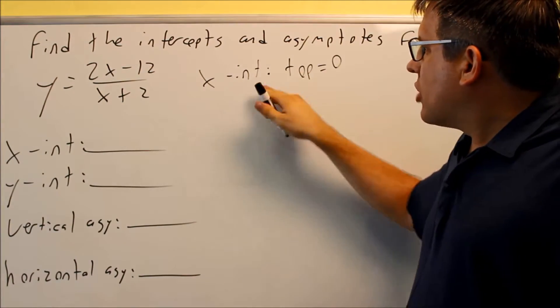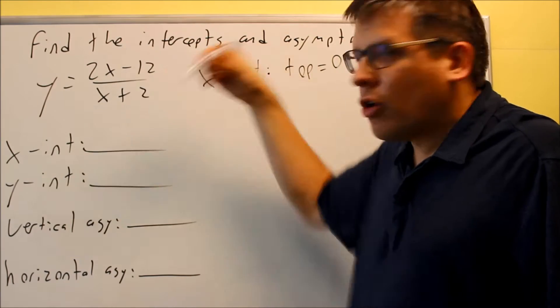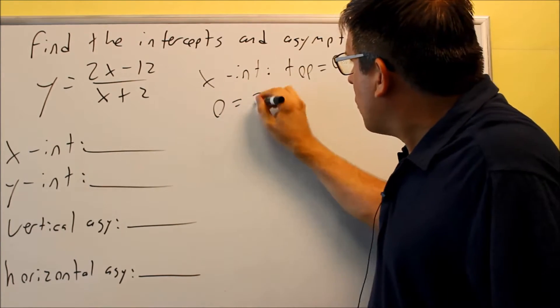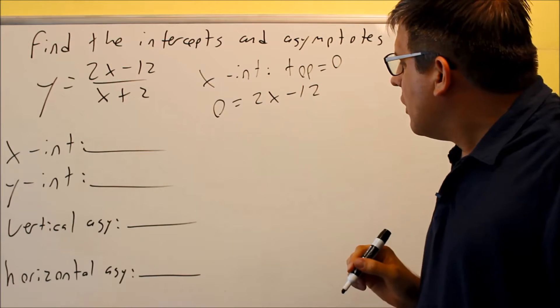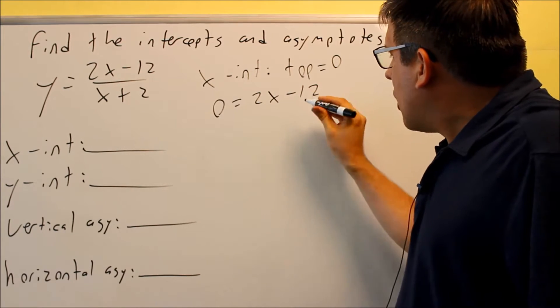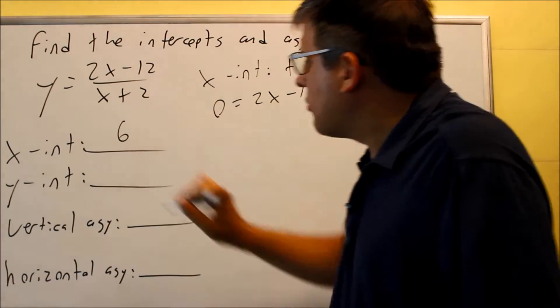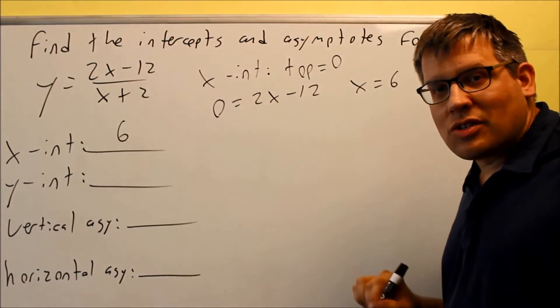So that's why, for x-intercepts, if the top number is 0, the whole thing is going to be 0, so that's what we're going to do. So we have 0 equals 2x minus 12, and when you solve for this, you're going to get x is equal to 6. That means that the x-intercept is going to cross the x-axis at 6.